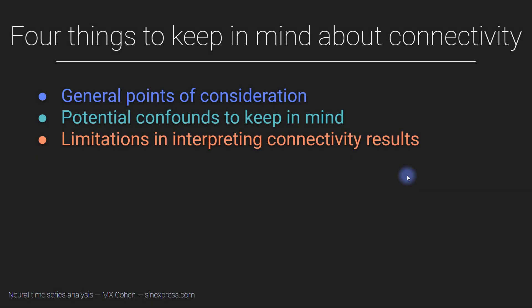Welcome to this section of the course. This is all about various methods for computing synchronization between two different electrodes or two different brain regions. The idea is that these statistical measures of synchronization reflect something about brain connectivity — functional interactions between distinct neural populations. Before getting into the actual methods, this video and the next will cover some general points of consideration to keep in mind whenever you are doing connectivity analyses, particularly with electrophysiology data, although some points also apply to imaging data.